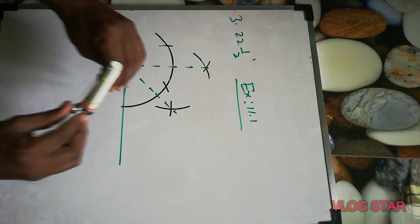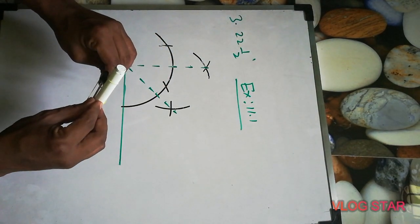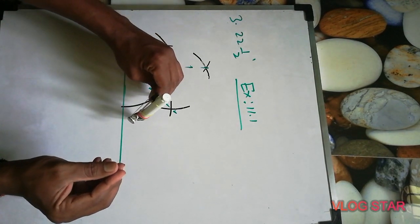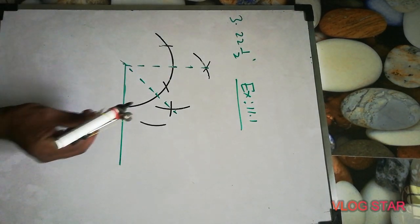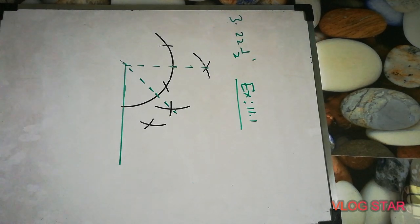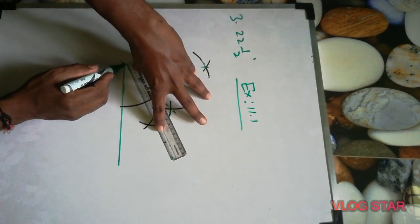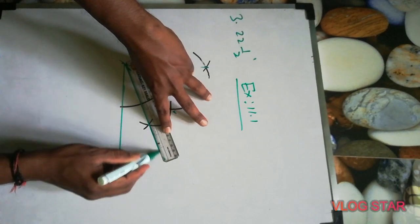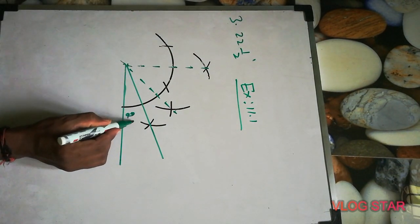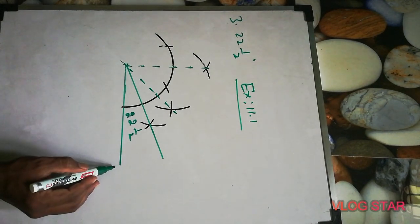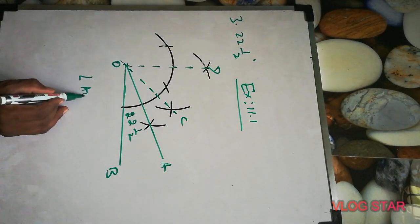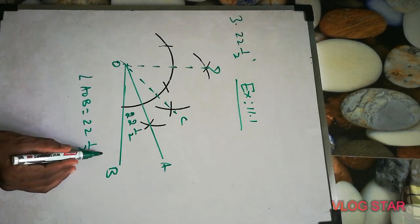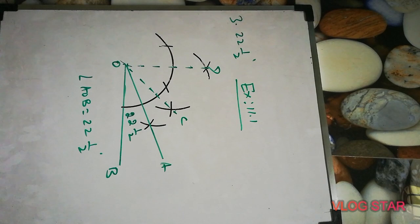From the 45 degree line, take more than half and cut it. Again from this point cut again. If you join these two intersection points, that is 22 and a half degrees. You can label points A, O, B and then write C and D. So angle AOB equals 22 and a half degrees.